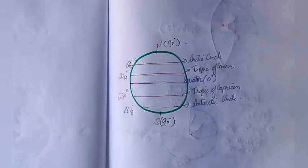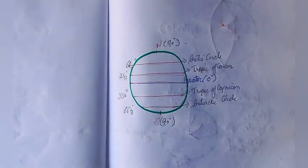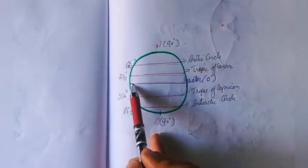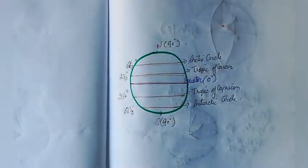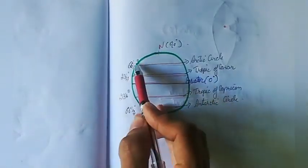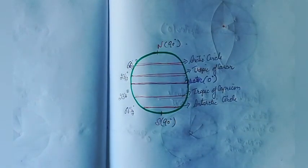These are all important latitudes — we should remember their names and values. The equator is a great circle with the maximum diameter, and all other circles which do not pass through the center of the Earth are called small circles. So in this diagram, the equator is a great circle and all other latitudes are small circles. The equator itself is a latitude with a value of 0°.